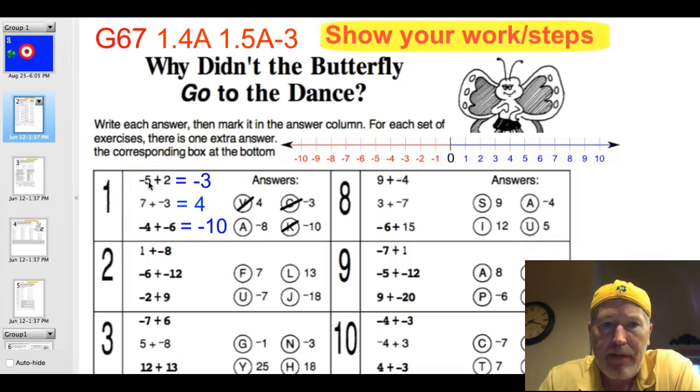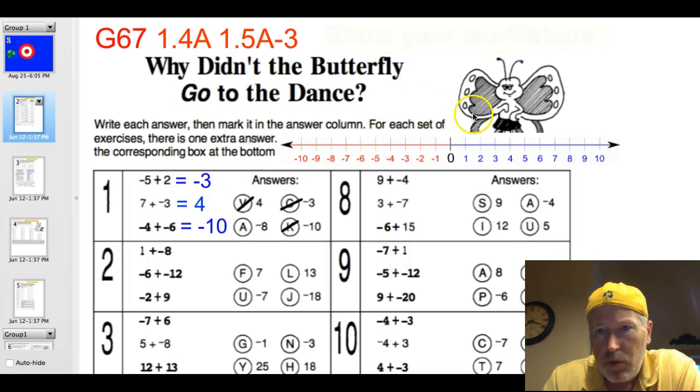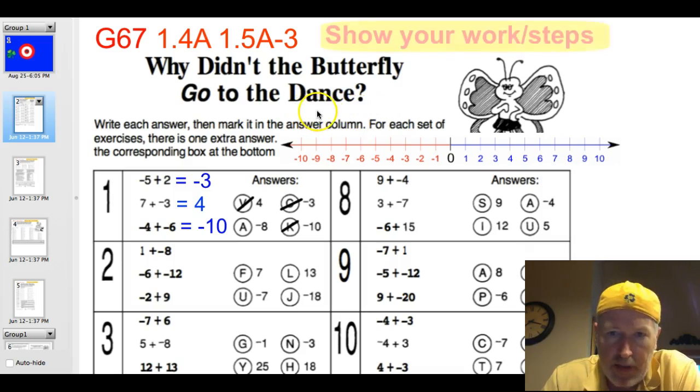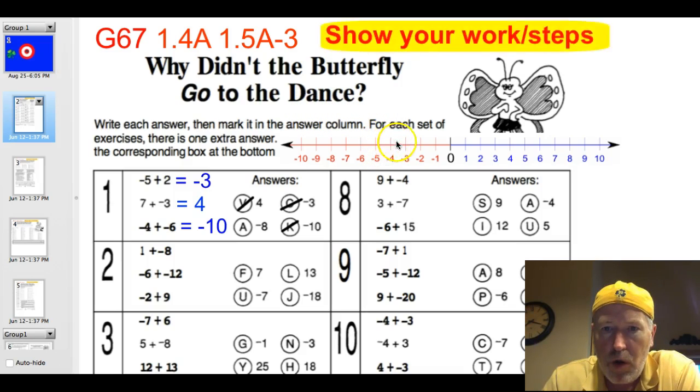We have a negative 5, and we're going to add 2. So if you remember on our number line, if we go to the right, we're adding. If we go to the left, we're subtracting. So we're at negative 5. We're going to add 2. 1, 2. We're up here at negative 3, and you can see that's what I've got for my answer.